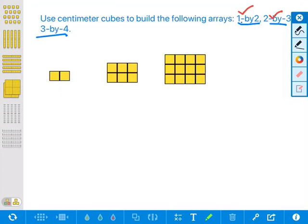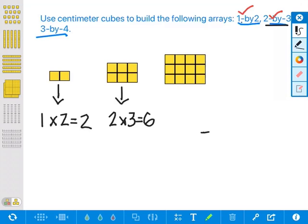Well, this one would represent one times two, right? Because it's one by two. This one was two by three. So two times three, which is six. This is two. And this one would represent three times four.